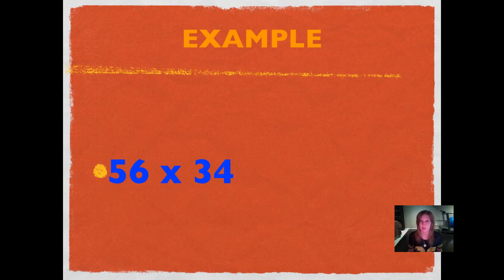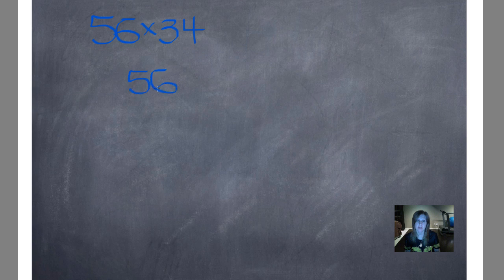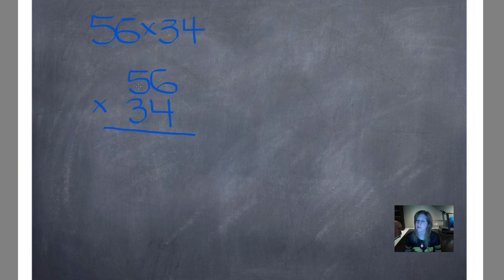Here is our first example: 56 times 34. We're going to go ahead and do this one together, so follow along as I do it in your journal. When we multiply using the standard algorithm, we're going to write the larger number on top: 56 times 34. We always begin multiplying by the bottom number in the ones place, starting by multiplying straight above it, then fan out and multiply by the number in the tens place.